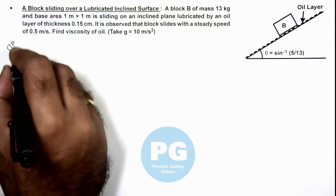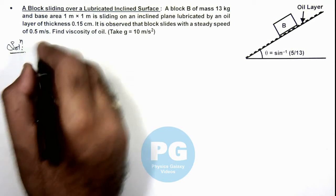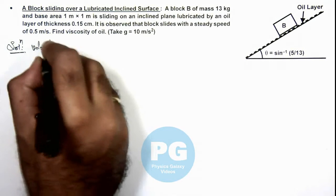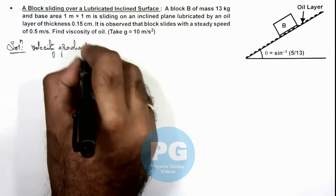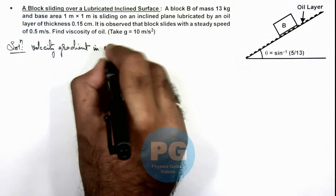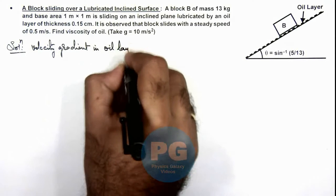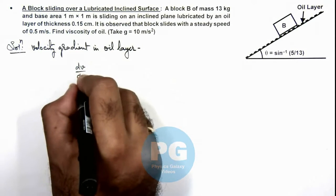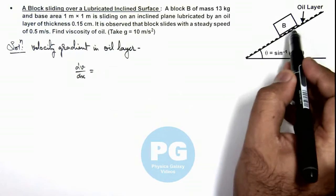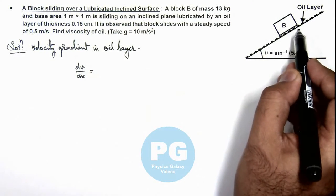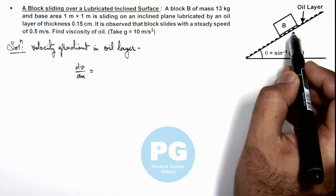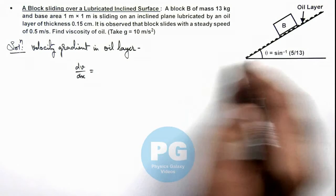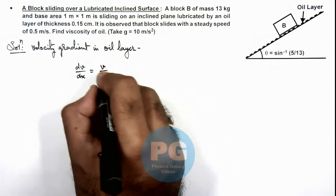In this situation, we can first calculate the velocity gradient in the oil layer, which can be given as dv/dx. Here, the layer of oil which is in contact with the inclined plane will be at rest, and the layer which is in contact with the block will be sliding with velocity v. So this can be written as v by x.